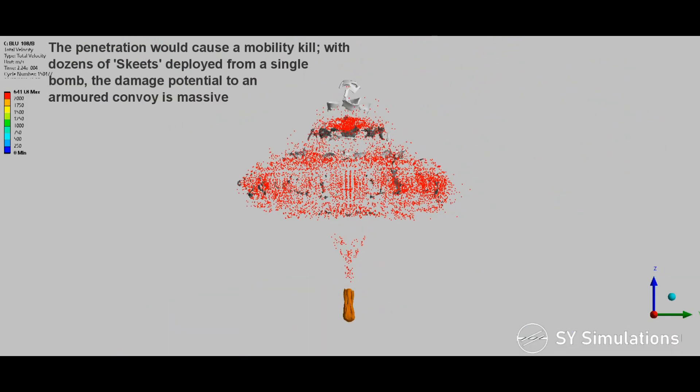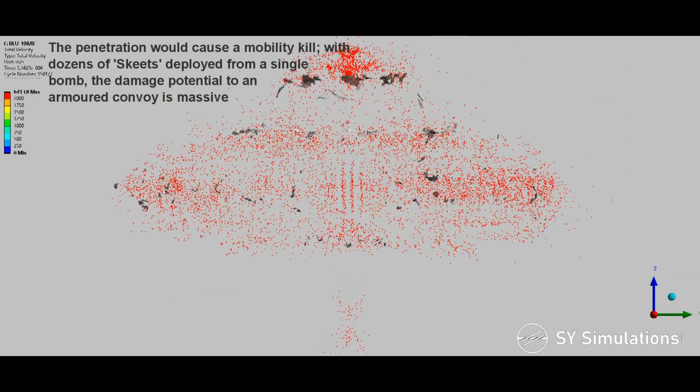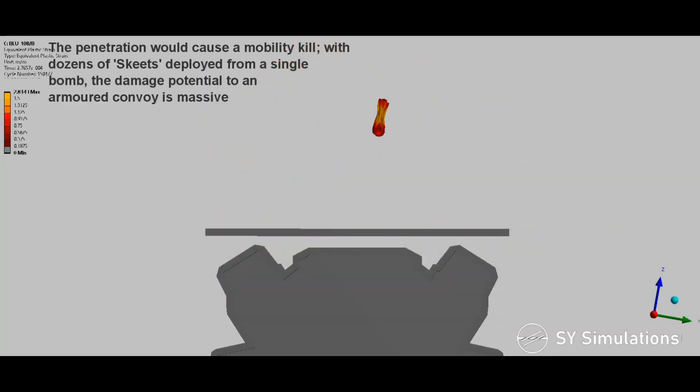The penetration would cause a mobility kill. With dozens of skeets deployed from a single bomb, the damage potential to an armored convoy is massive.